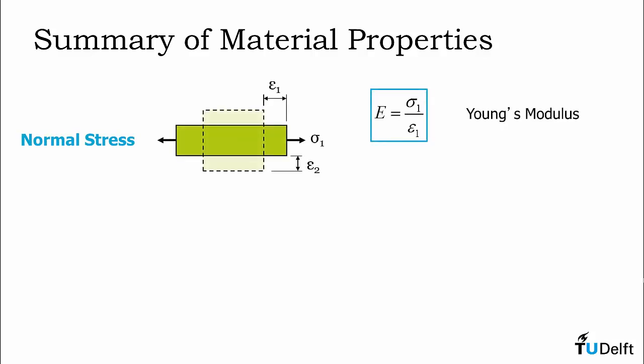Let's recap the material properties we have looked at so far. We have seen that in the presence of normal stress, we get two normal strain values. The normal strain in the direction of loading is proportional to the normal stress through the Young's modulus. The transverse strain can be related to the strain in the direction of stress using the Poisson's ratio.